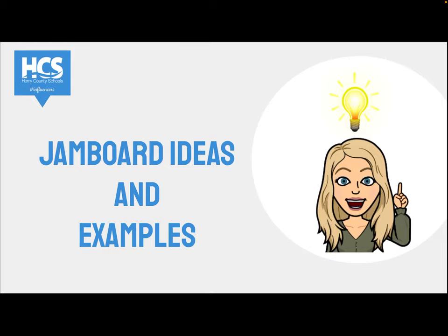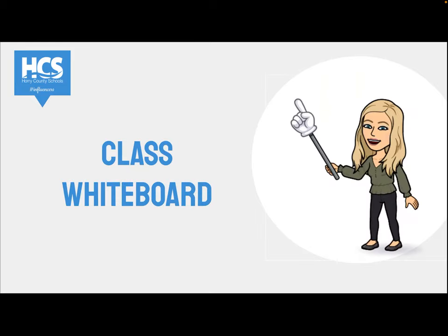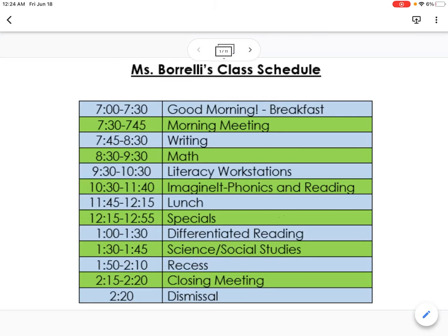Now we're going to explore some ways Jamboard can be implemented in an elementary school classroom. One way is creating a class whiteboard on Jamboard. This way students can be using the Jamboard while you show the content on your whiteboard. This can provide the class schedule and an outline of the learning content and standards for each day. You can provide anchor charts, references, posters, standards, reading and response charts, and other visuals for students to use as references. I use this in my classroom so students that have a hard time seeing the board can access the content and reference what I'm teaching.